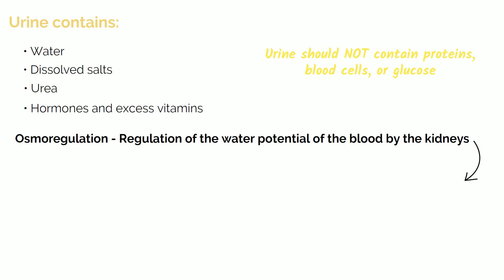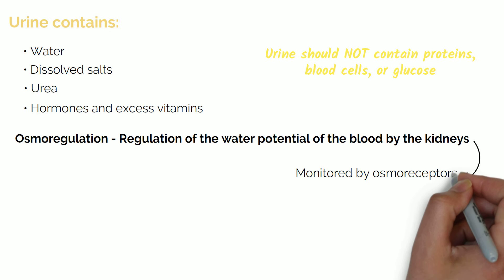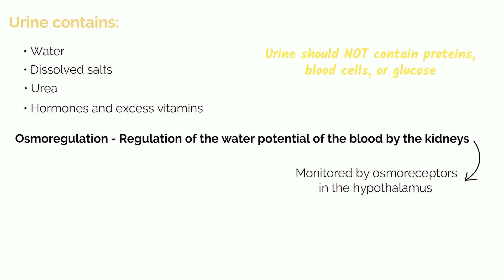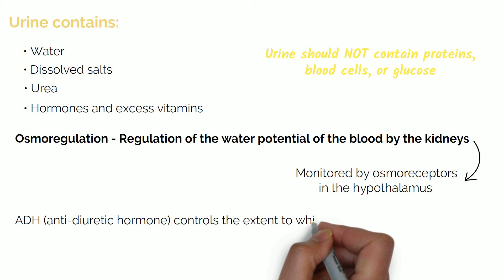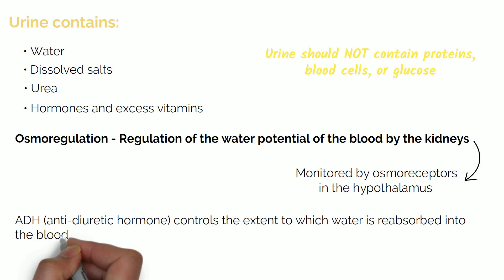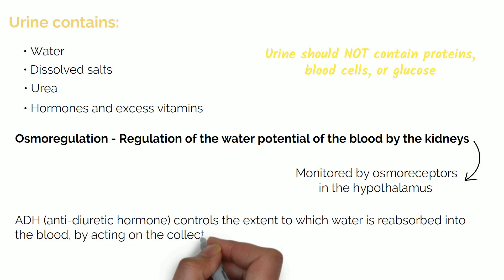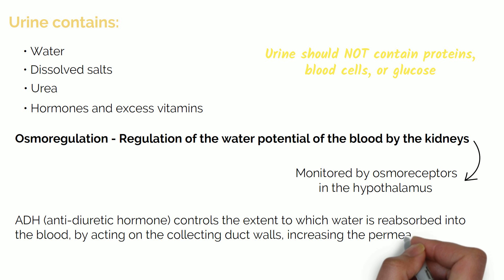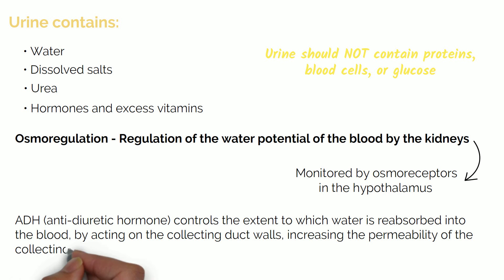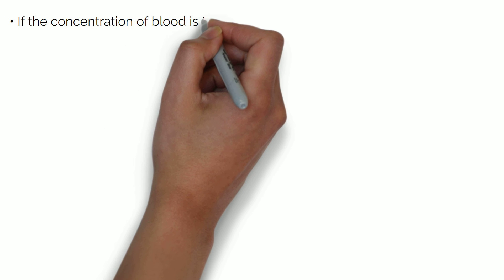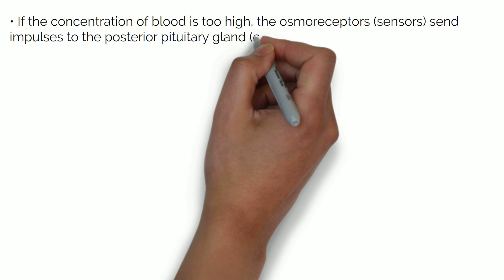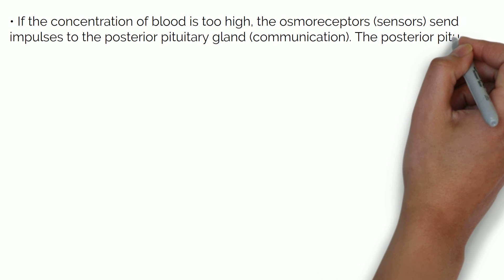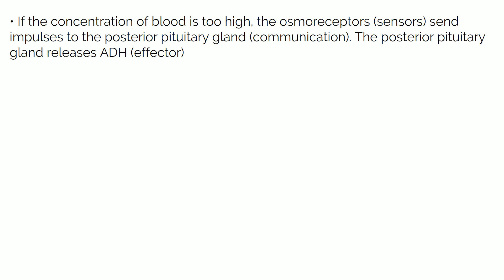The water potential of blood is monitored by specialised sensors called osmoreceptors found in the hypothalamus of the brain. The hormone antidiuretic hormone, or ADH, controls the extent to which water is reabsorbed into the blood by acting on the collecting duct walls, increasing their permeability to water. If the concentration of blood is too high, the osmoreceptors — the sensor — send impulses to the posterior pituitary gland, which releases ADH, acting as the effector. When the water potential returns to normal, the impulses stop.